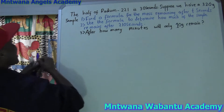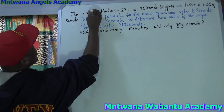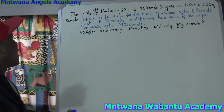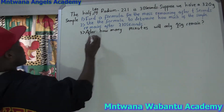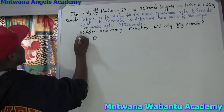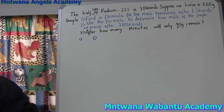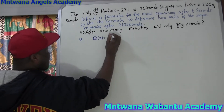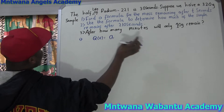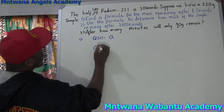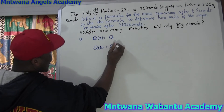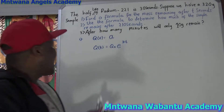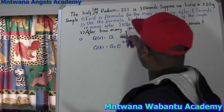Now let's go. This is a half-life question. So we have a formula for this. The formula says Q — so this is one solution. The formula says Q final, equal to sample initial, or you can say Q naught. Some people say Q final after a certain time T, equal to Q initial times E power KT.